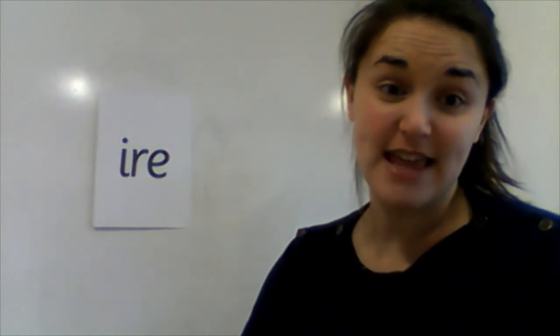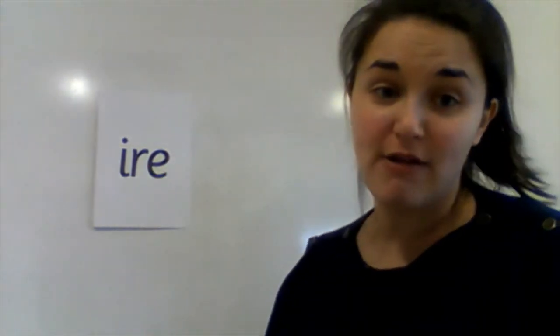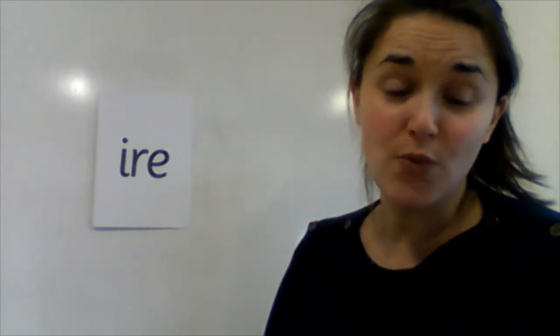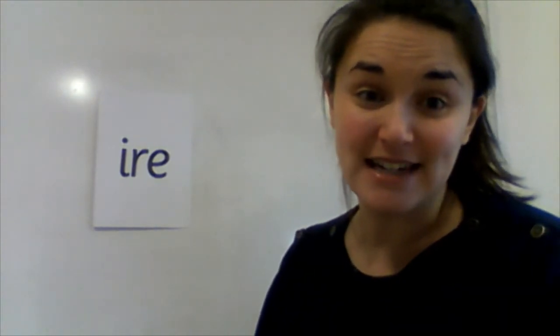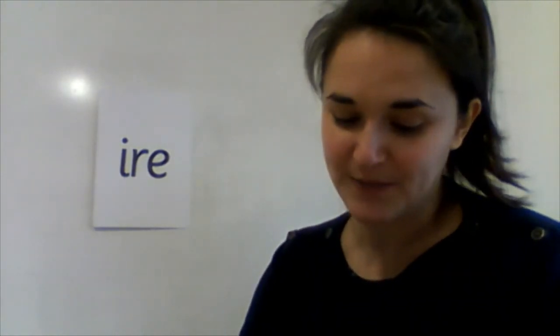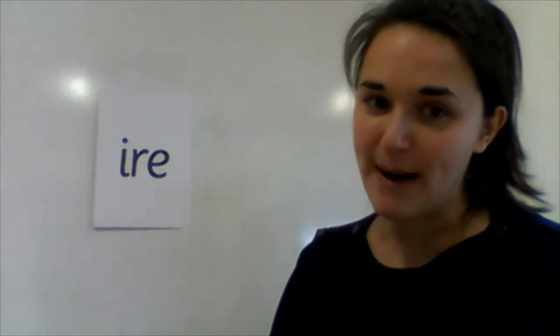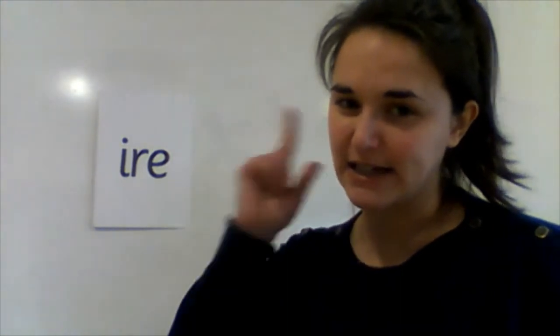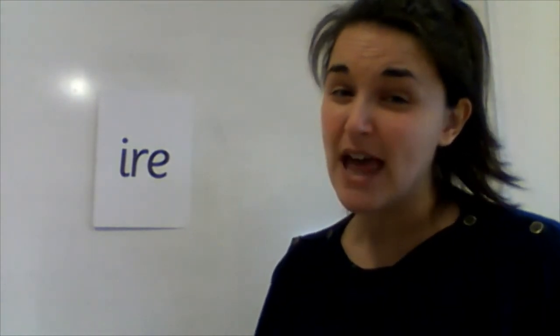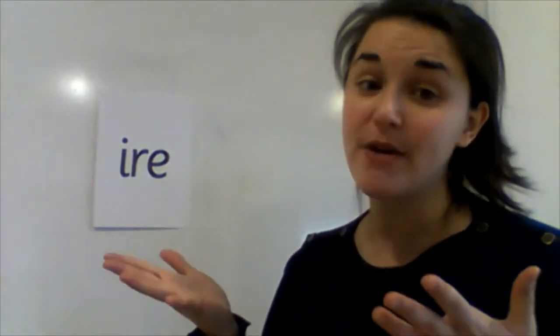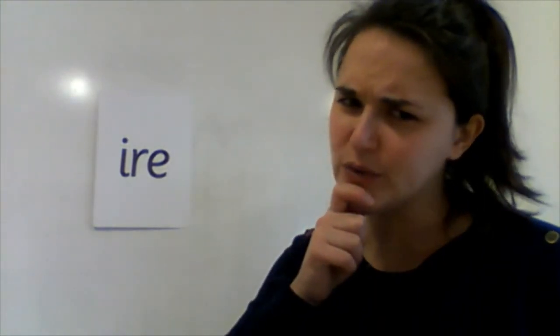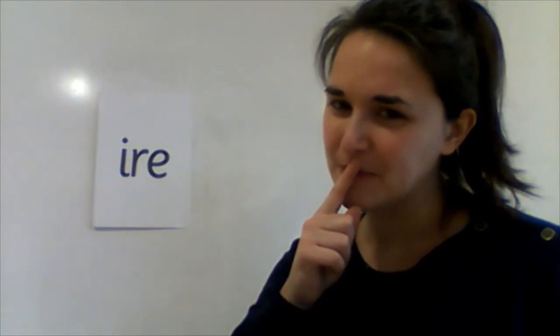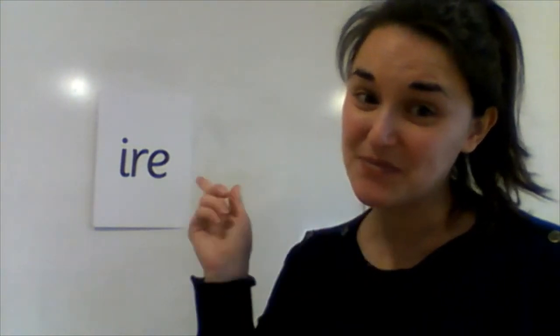In your home learning pack, you will have a game with lots of words containing my trigraph, ire. See if you can roll your dice, choose a word and read it. Then see if you can put it in a sentence. Once you've done that, come back and join the video because we're going to write a sentence this morning. The sentence is, Can a vampire breathe fire in your house? I'll say it again because it's quite a long sentence. Can a vampire breathe fire in your house? Think carefully about your punctuation. What type of sentence is this? Does it need a full stop? Have a think. When you're ready, have a look on my board.